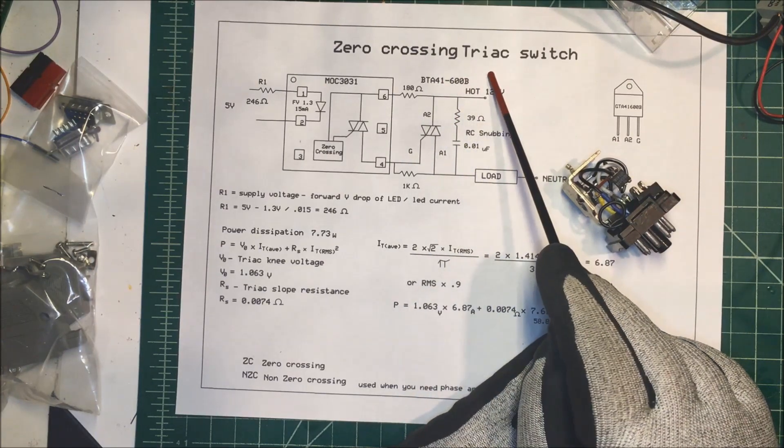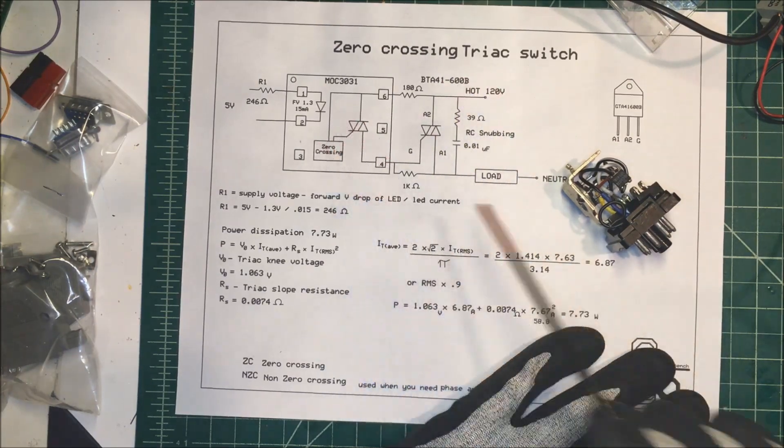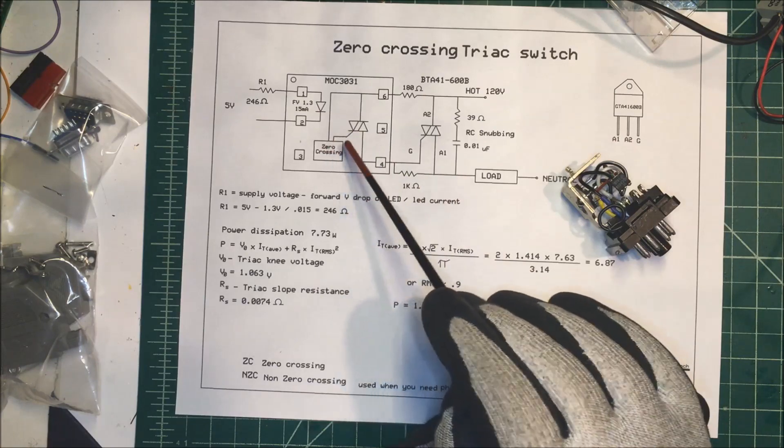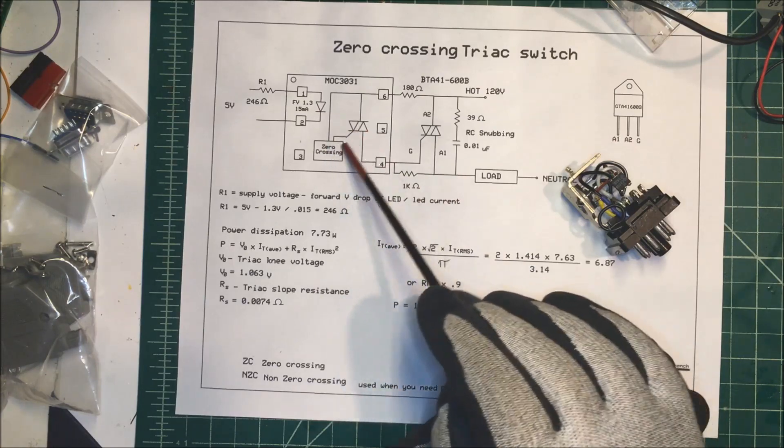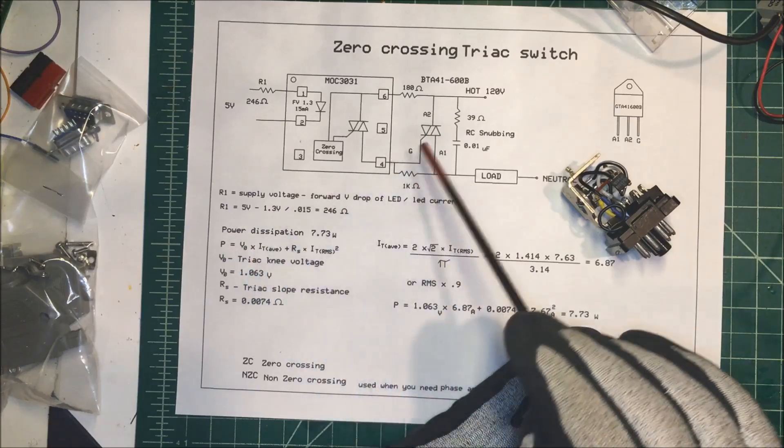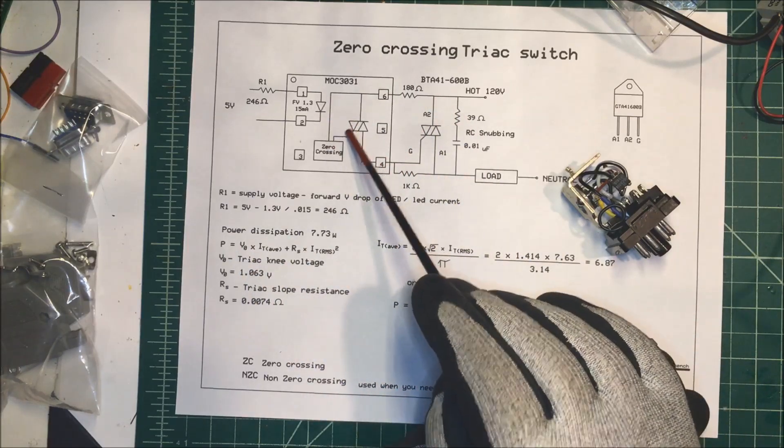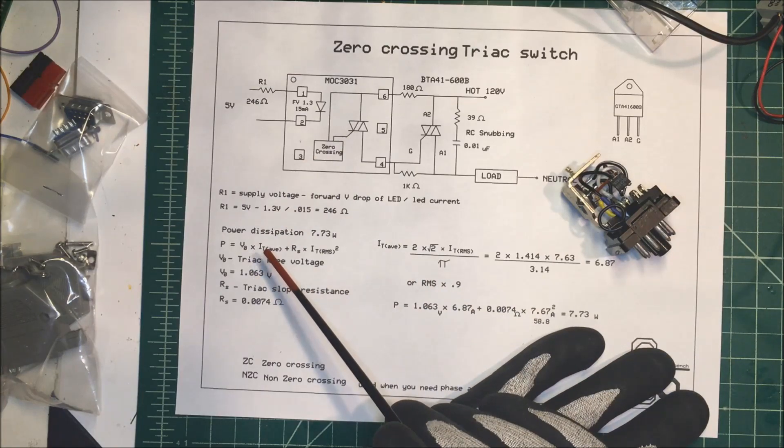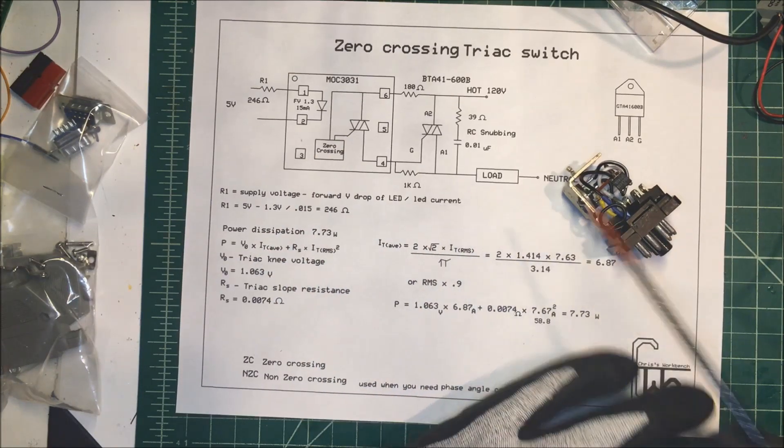Last week I made a zero crossing triac switch and I used this optocoupler here. It has a zero crossing built into it and it's a triac driver, so it'll actually drive the triac for you. This actual circuit is in the datasheet when you look this optocoupler up.